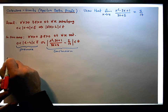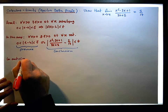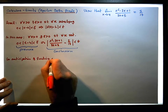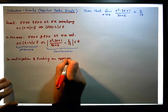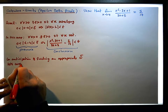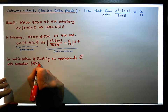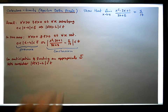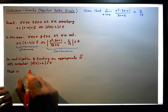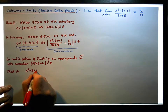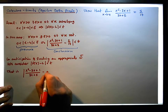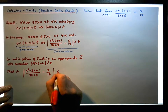So in anticipation of finding an appropriate delta, let's consider the absolute value of f of x minus L is less than epsilon. So let's just take this conclusion — that is, we need to consider x squared minus 3x plus 1, all over 3x plus 5, the absolute value of that minus 5 seventeenths is less than epsilon.